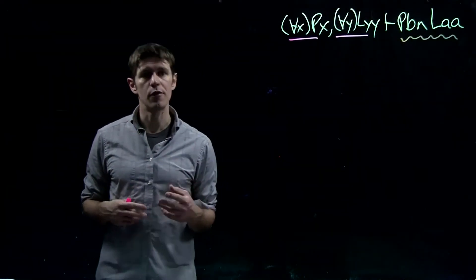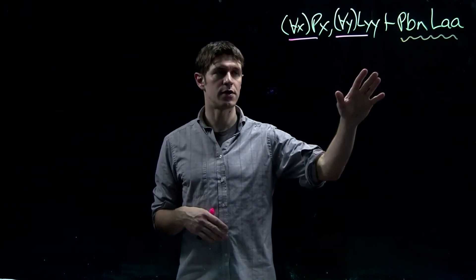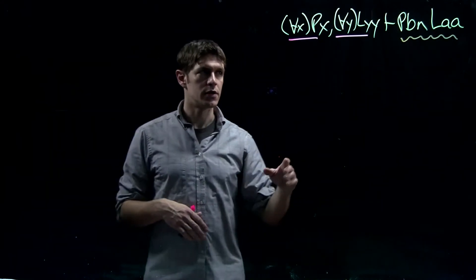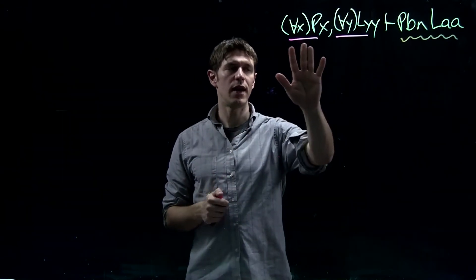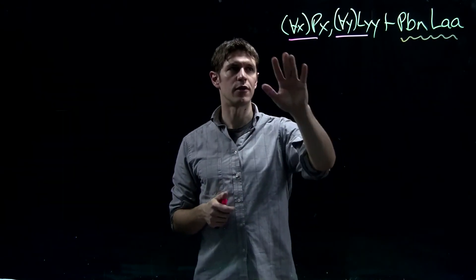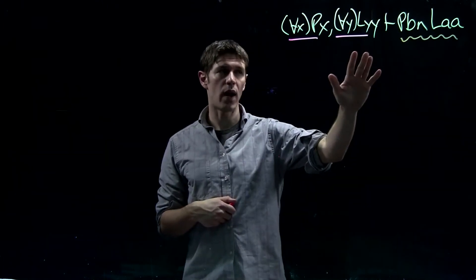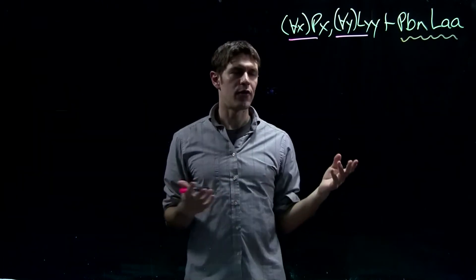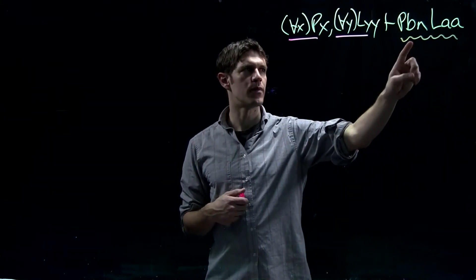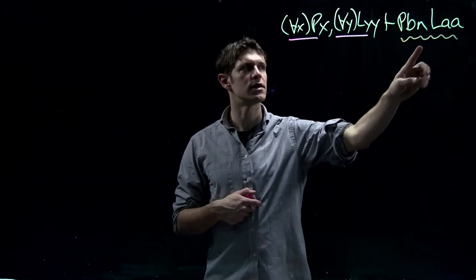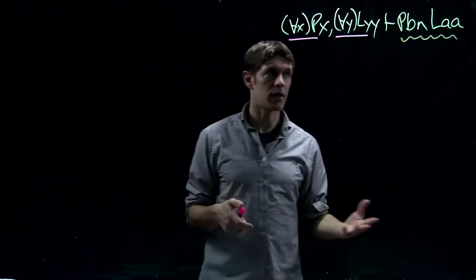Let's look at a proof that focuses on the use of universal elimination. Here we have AX PX — everyone is a person — and AY LYY — everyone loves themselves. We want to reason to the conclusion that Bob is a person and Al loves Al, or Al loves himself.